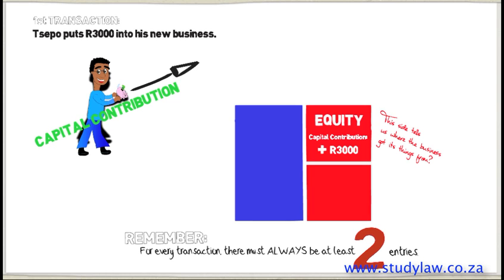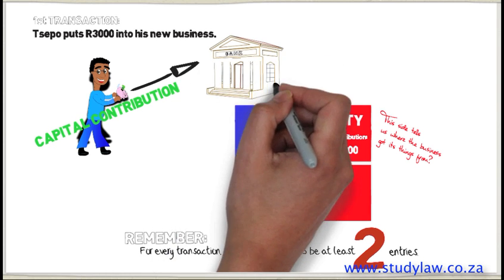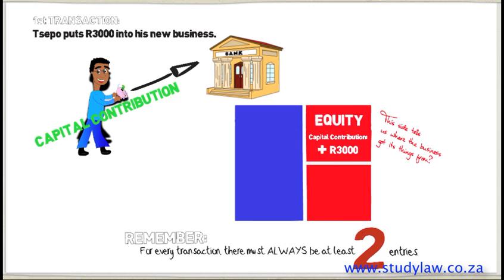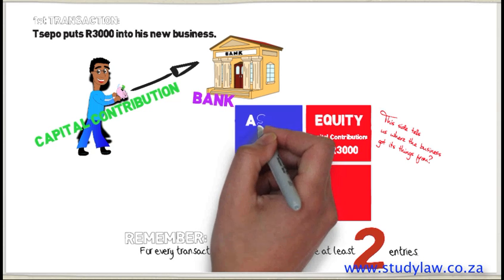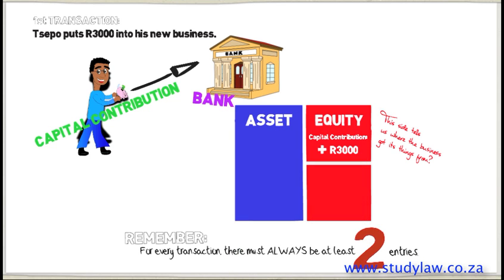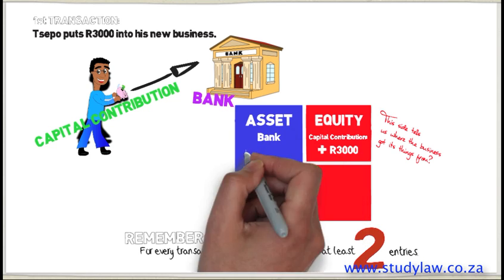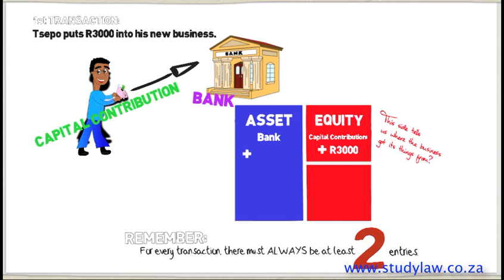When Seppo puts R3,000 into his company, his company gained that money. When a company receives money, this money is put into the company's bank account. Therefore, we will have an account called Bank. Bank is an asset. When the company gains money, their bank will increase. Therefore, we will go to the blue side and fill in the asset Bank, increasing it by R3,000.